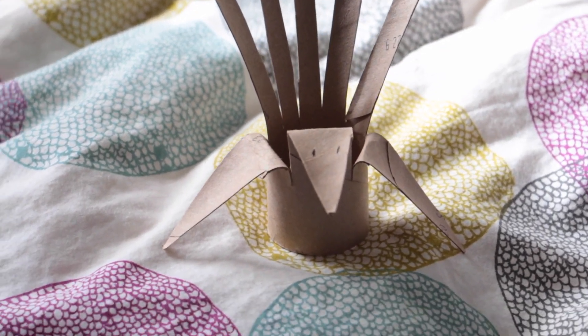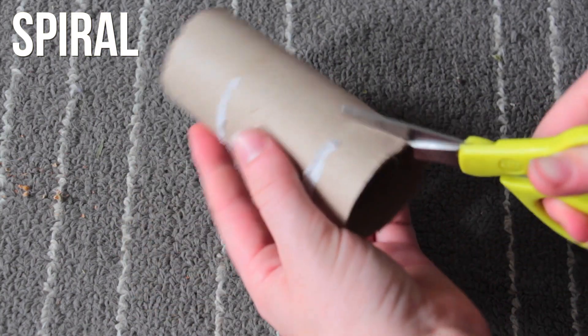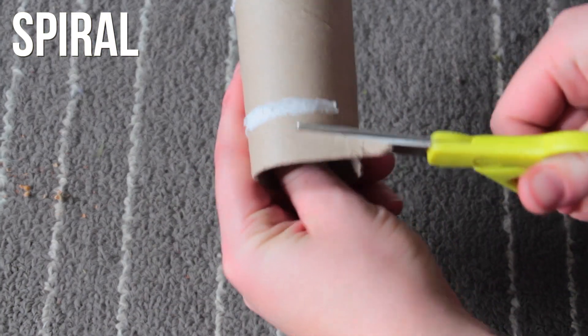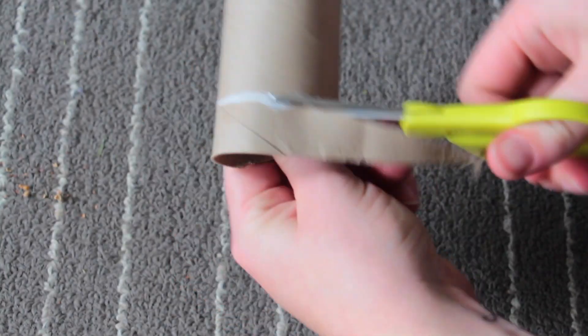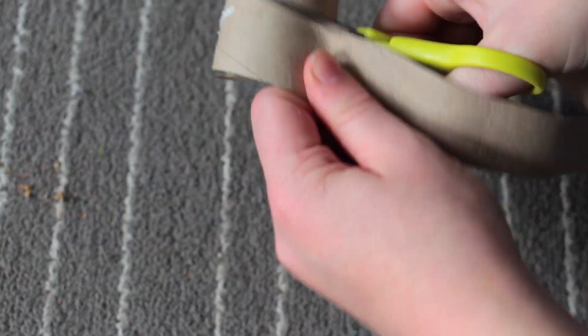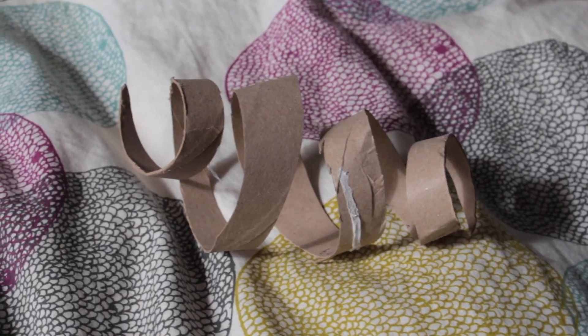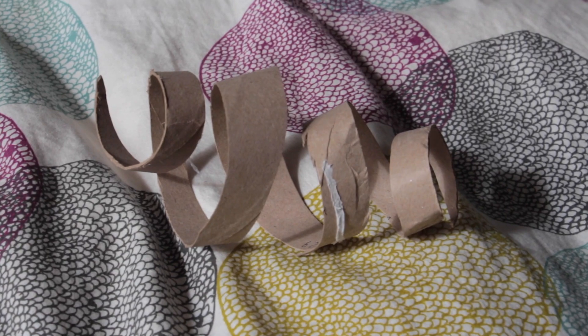Now we're going to make a really simple one. For this one, all you do is take the tube and cut it in a spiral. That is it. A lot of rabbits like this—just a fun little toy for them to toss around.